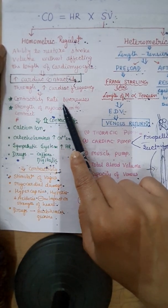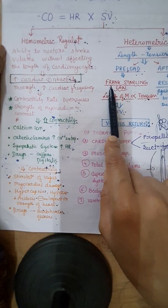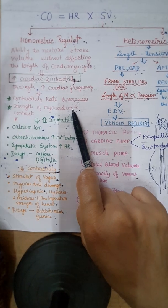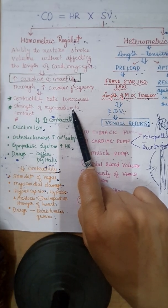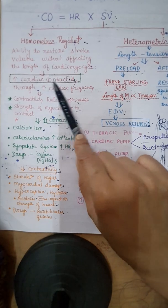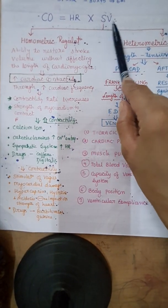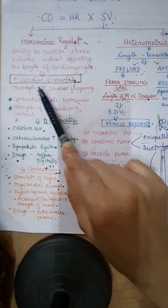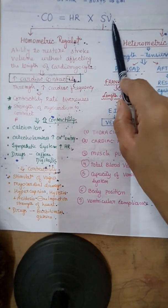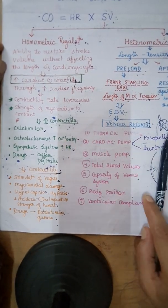The second factor is the strength of the myocardium — how much it can contract. These two factors make up cardiac contractility. More cardiac contractility means more stroke volume; less cardiac contractility means less stroke volume. Certain factors can affect cardiac contractility.